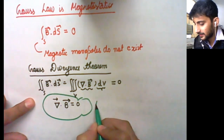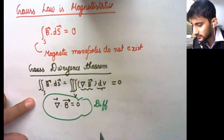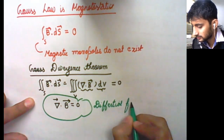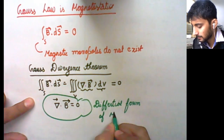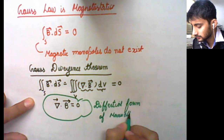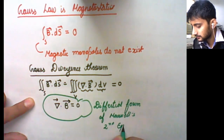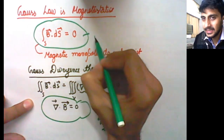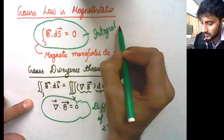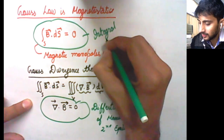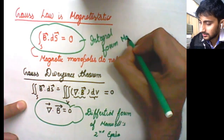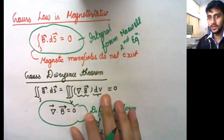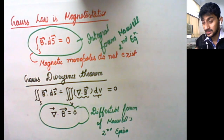So divergence of B = 0 is the differential form of Maxwell's second equation, and the surface integral B·dS = 0 is the integral form of Maxwell's second equation. In total, we have four Maxwell's equations.